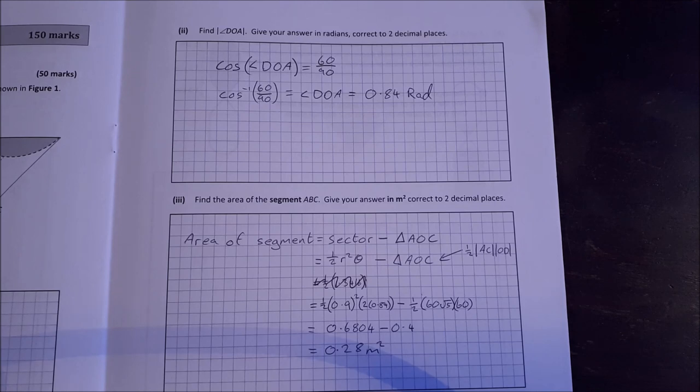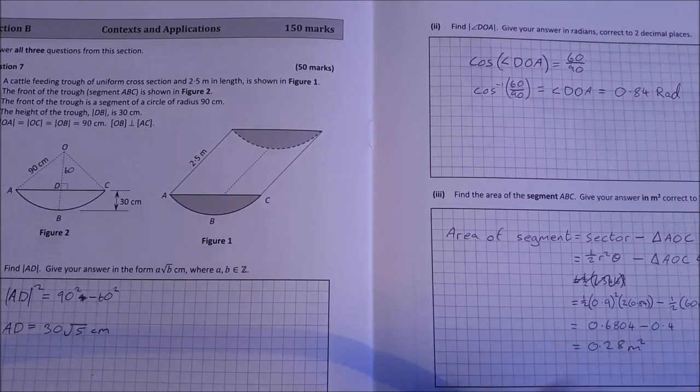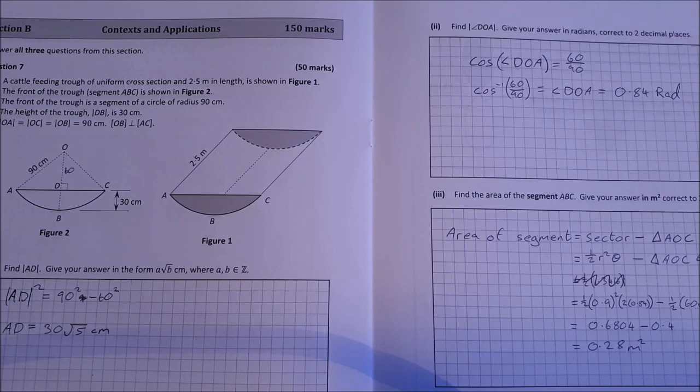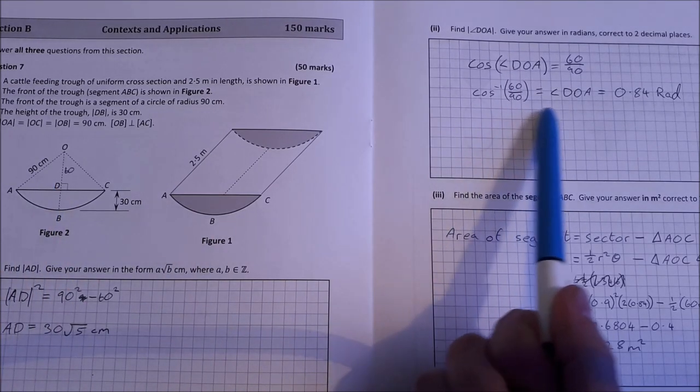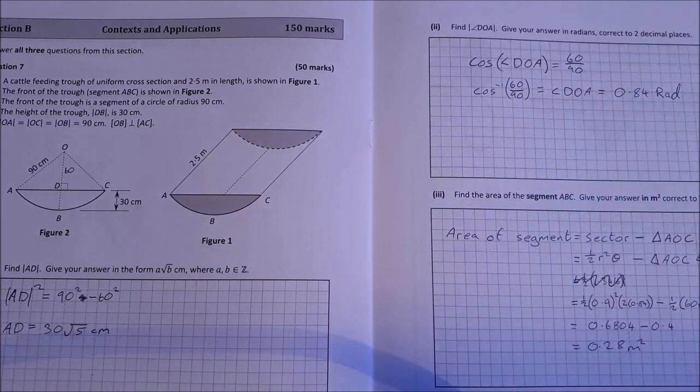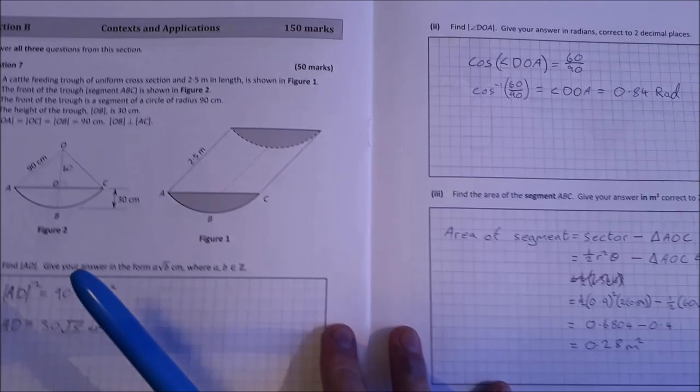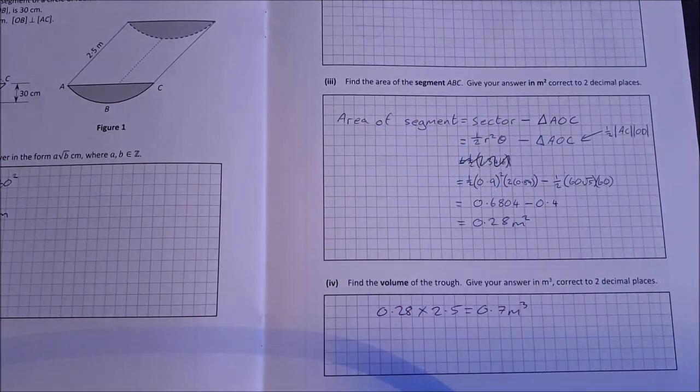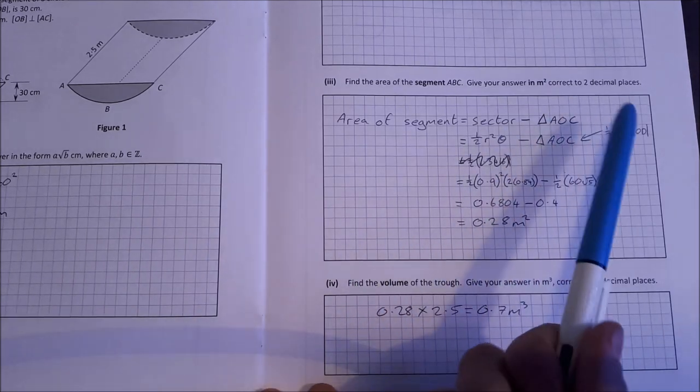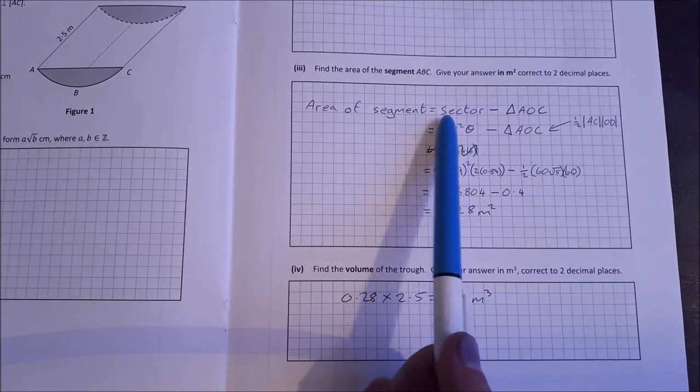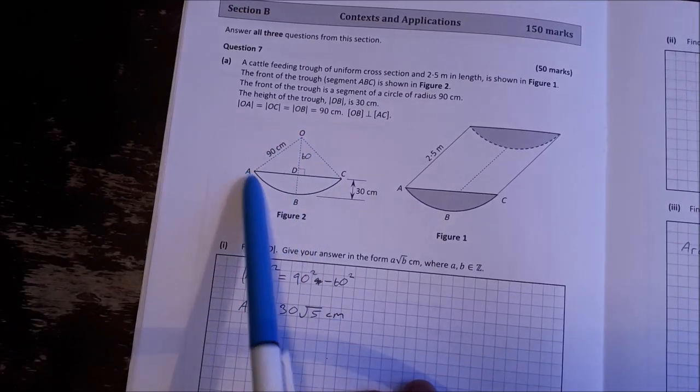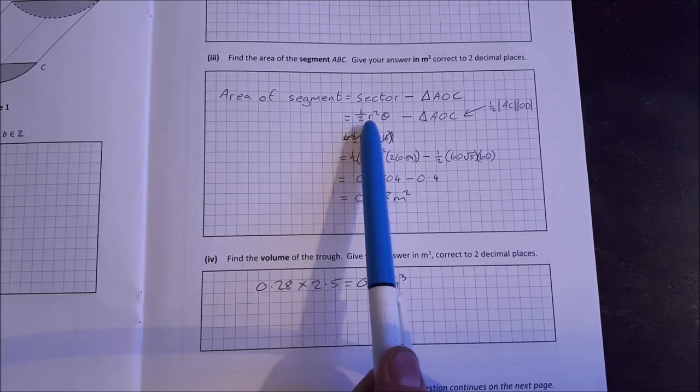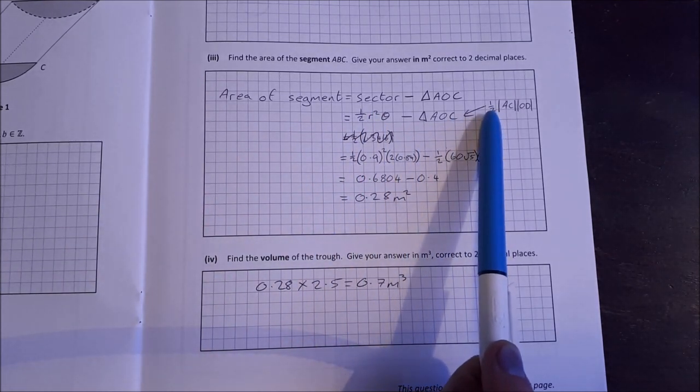So we can take the cosine of DOA. So cosine of DOA is equal to 60 over 90. So cosine of 60 over 90 would be the angle DOA, which is 0.84 radians. Find the area of the segment ABC. Give your answer in square meters. So the area of the segment is the sector minus the triangle. So the full sector minus the triangle. So the sector is a half R squared theta and the triangle is a half AC OD.